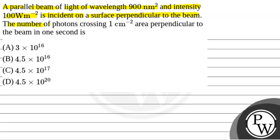The number of photons crossing one centimeter square area perpendicular to the beam in one second each.